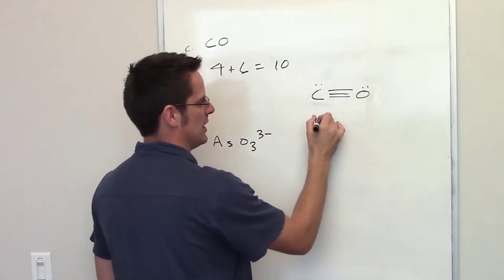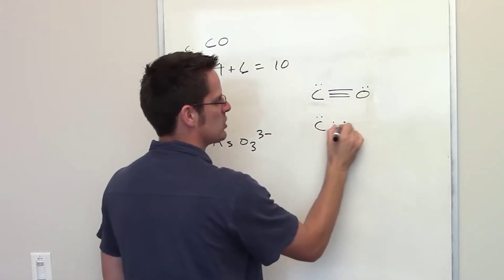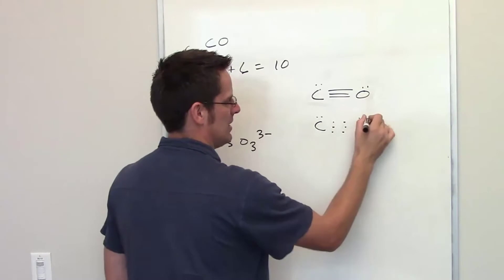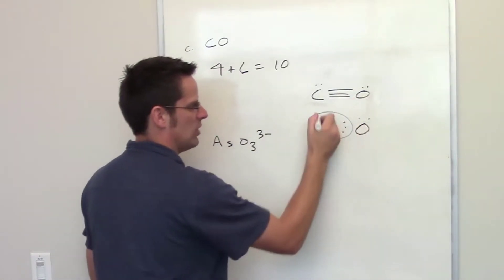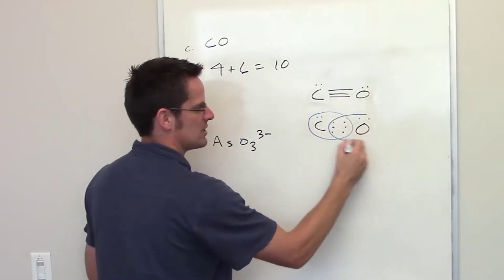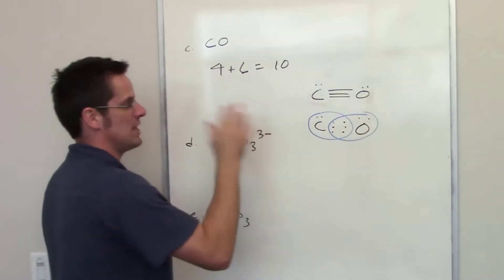Keep in mind, once again, that each of these lines represents two electrons that are being shared. If you wanted to draw out all of the electrons in this triple bond, you draw them out like this, and then you can notice that carbon feels like it has all of these eight electrons around it, as does oxygen.